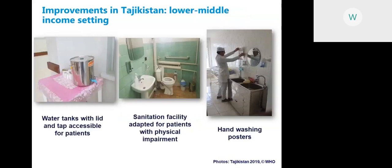In a slightly higher-income setting — Tajikistan's maternity department — water tanks with lids and taps were made accessible for patients where previously no drinking water was available, sanitation facilities were adapted for patients with physical impairment, and hand washing posters were put up in key locations.